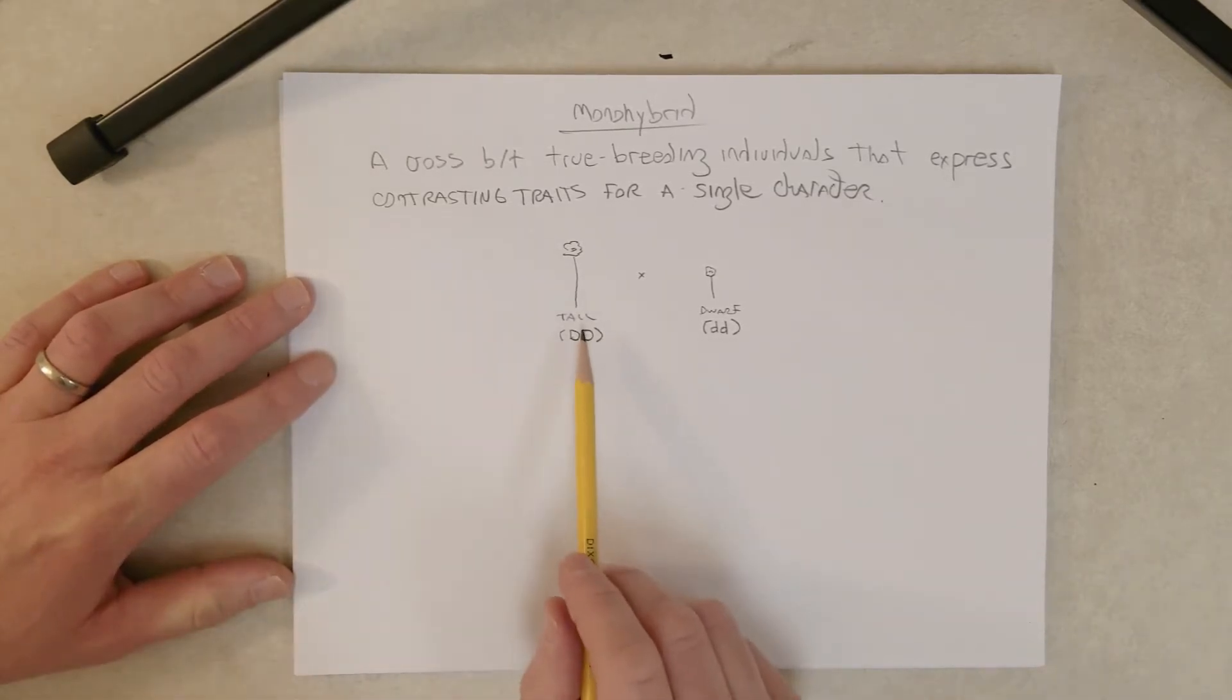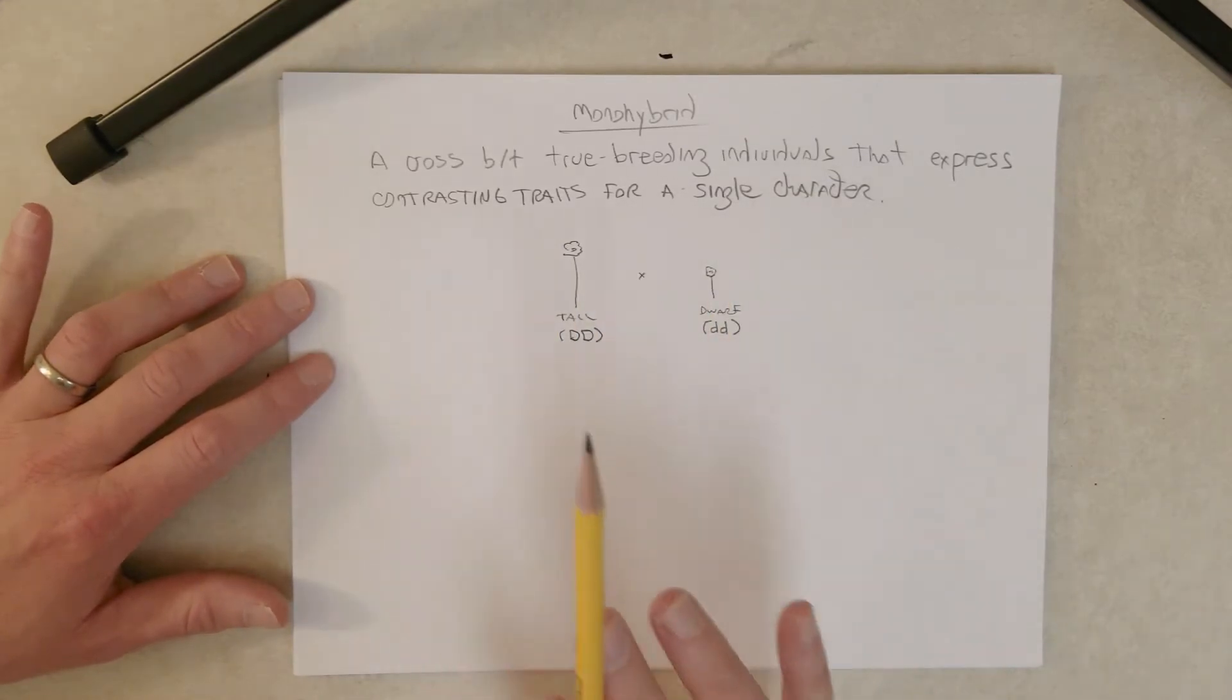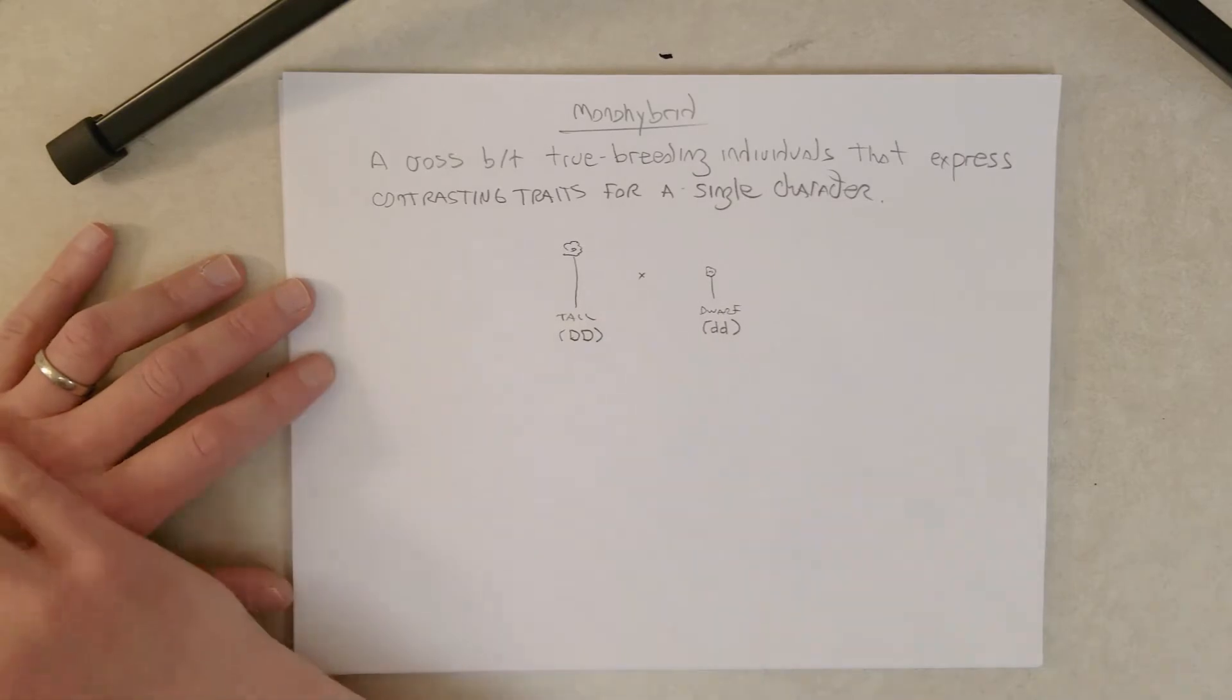So true breeding, where does that word come from? True breeding means if Mendel was to take a tall true breeding plant and cross it to another tall true breeding plant, it would produce only tall progeny. No matter how many times he did these crosses in a true breeding lineage, all the plants would produce tall offspring if they were crossed again to another member of that true breeding lineage.